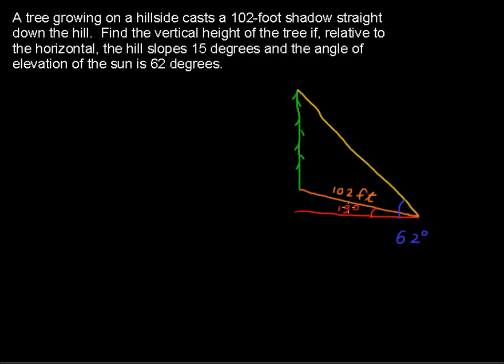But we're taking up 15 degrees from this hillside. So what I have left in yellow, or I'll put it in orange for the shadow, what I have left in orange is 62 minus the 15 degrees. So this angle between the ground and the sun coming in is actually just 47 degrees.